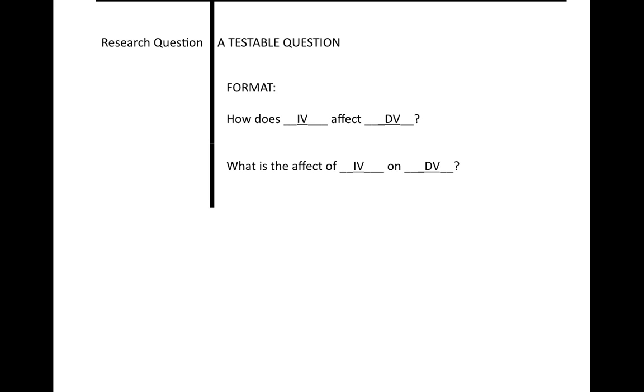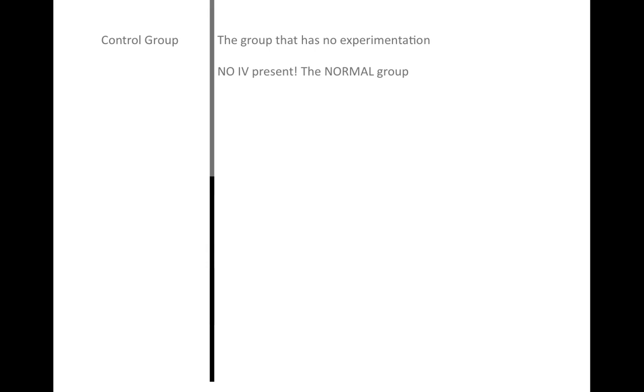The format is: how does the independent variable affect the dependent variable? Or you can also say: what is the effect of the IV on the DV? For example, with our water and the plant growth, you would say: how does water affect plant growth? Water is your independent variable and plant growth is what you're measuring—the dependent variable.